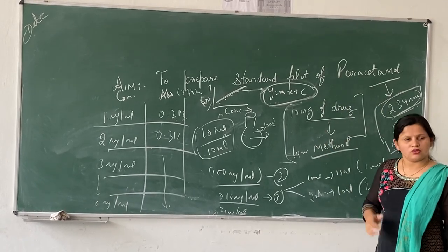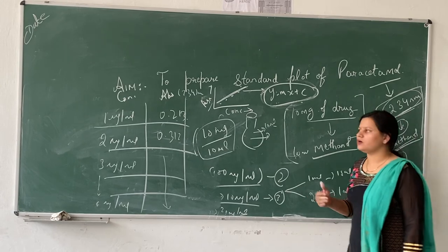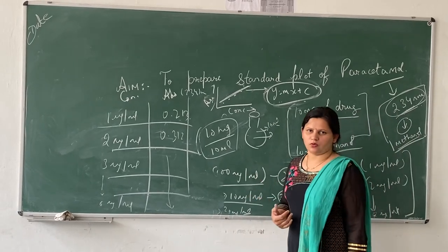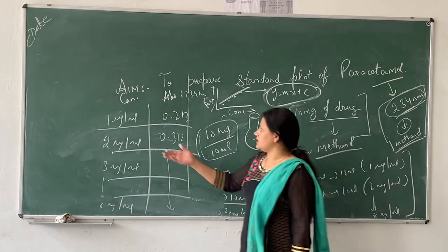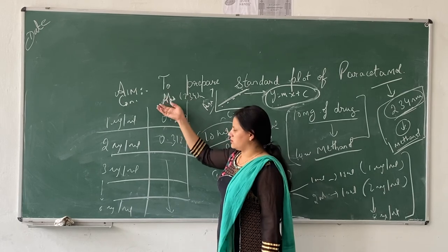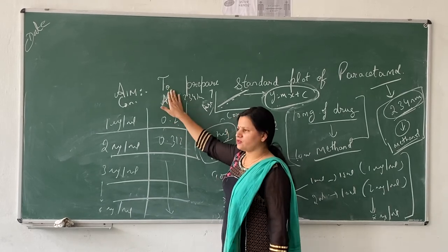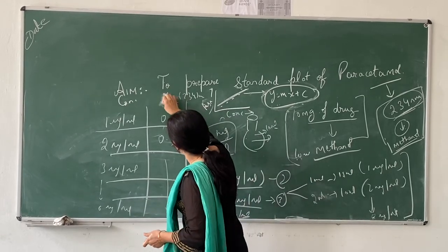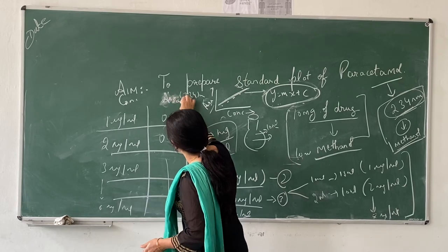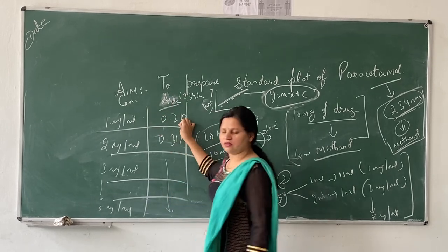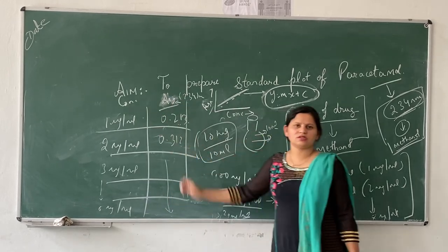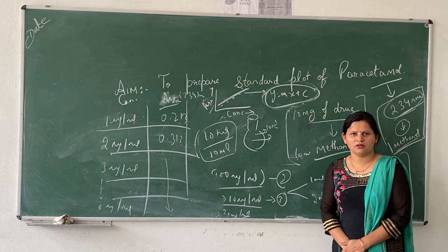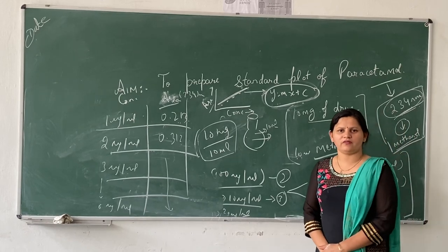Here I have only explained the concept of the standard plot on the basis of UV spectroscopy. You can also plot the standard plot using HPLC. In case of HPLC, instead of absorbance values, you have to study the peak area with respect to concentration. So this is all about the standard plot of paracetamol — thank you everyone.